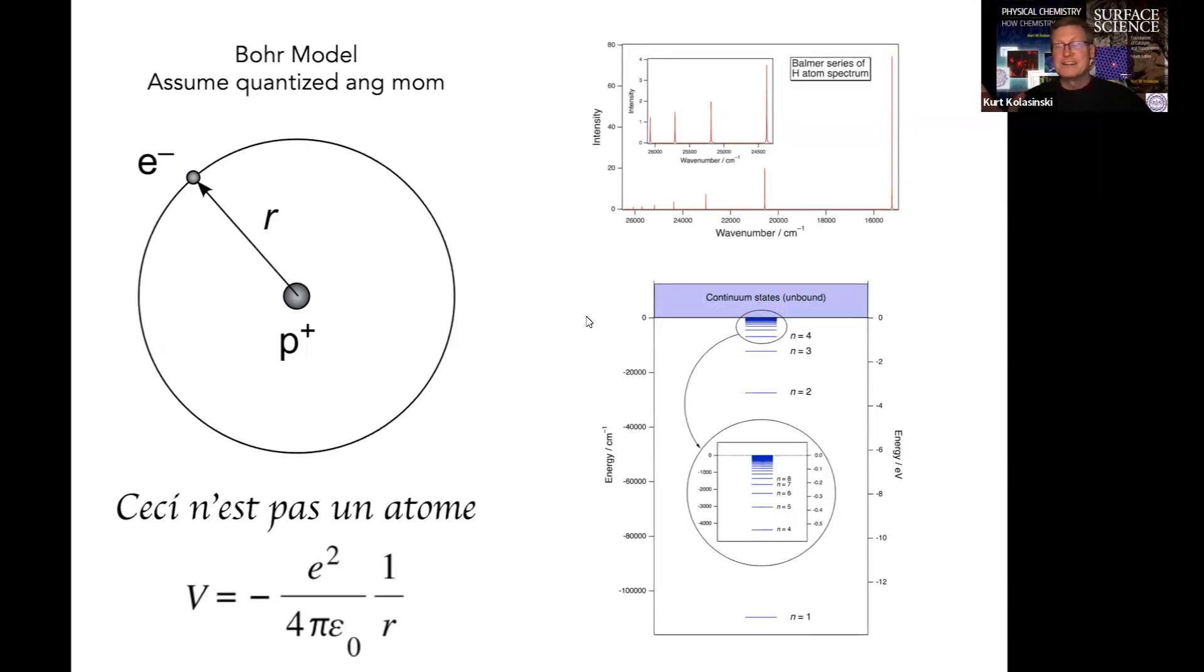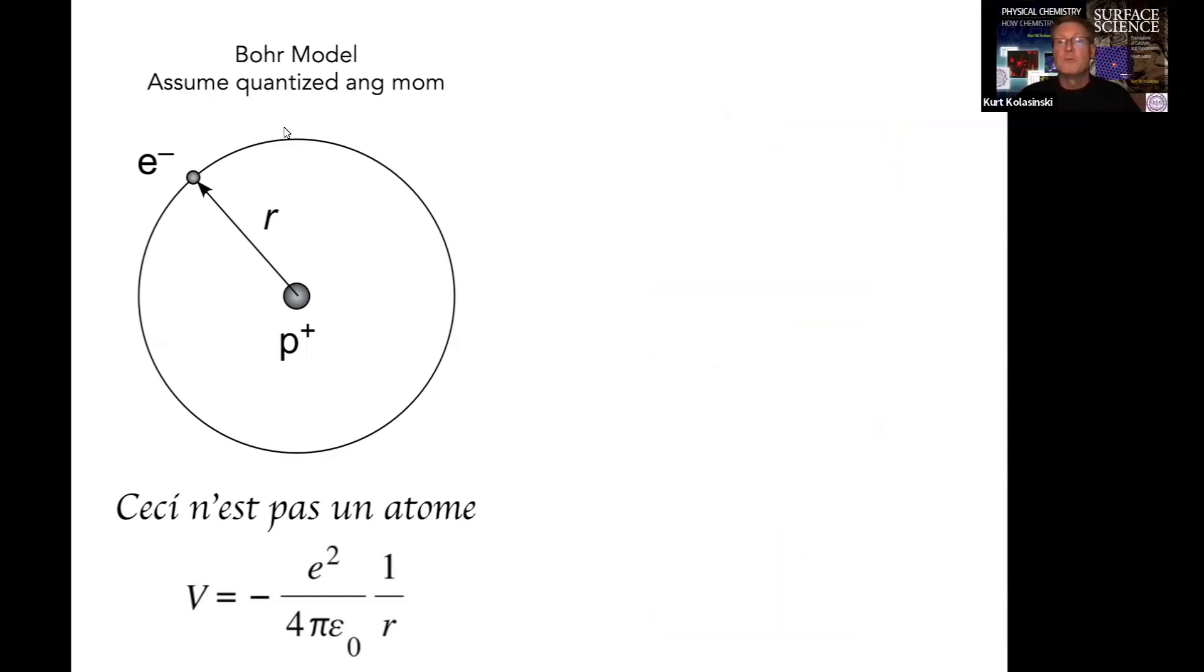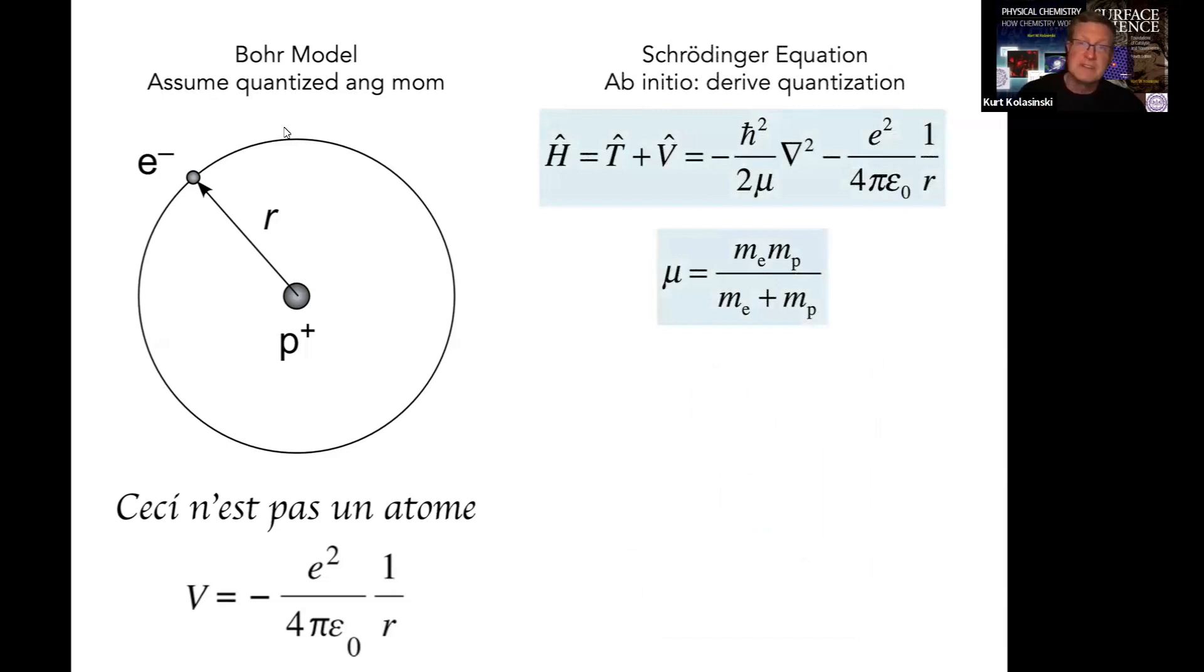But this is not an atom. This really isn't an atom—it's a model that explains a lot and gives us language to start understanding what is here, but we need to go beyond it. We need to go beyond an assumption of quantized angular momentum and derive that a priori. The way we can do that is by introducing Schrödinger's famous Schrödinger equation.